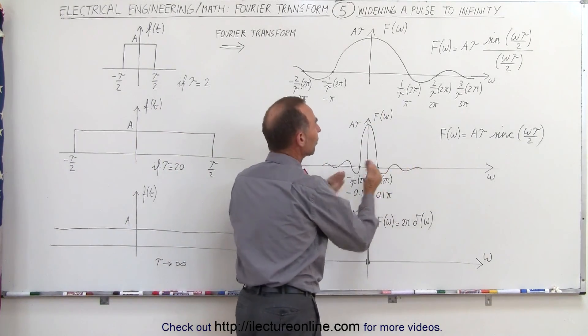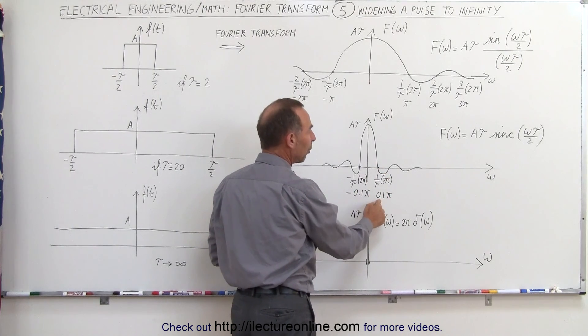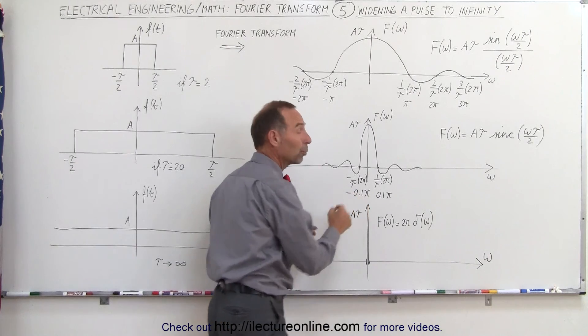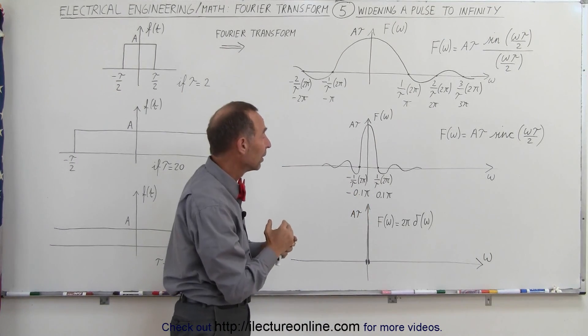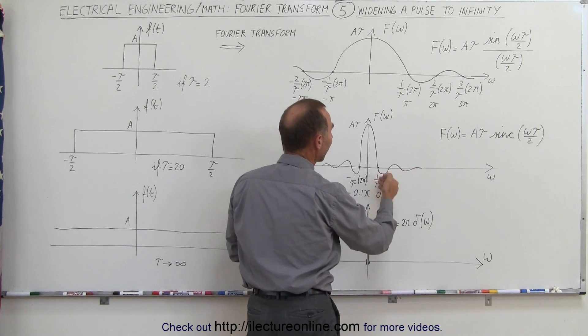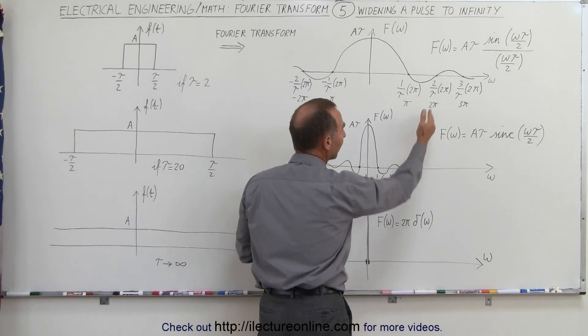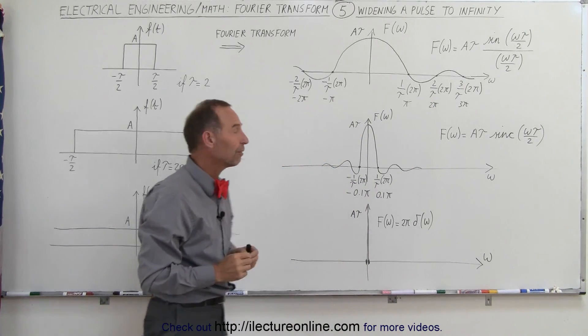Also it narrows the pulse. Notice that now the crossover point on the first point is 0.1 pi and minus 0.1 pi on the left side. So we actually narrow the pulse by a factor of 10, and every crossover point will be 0.2 pi, 0.3 pi, 0.4 pi, again one-tenth of what it was before.